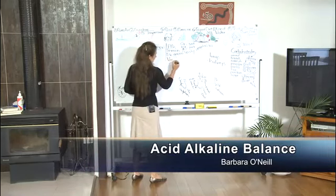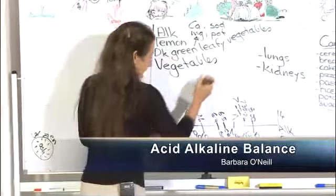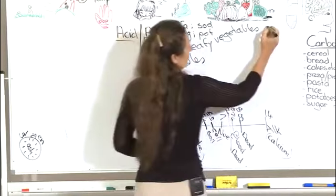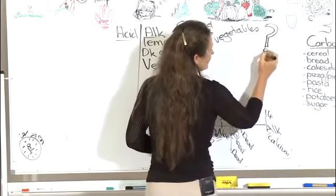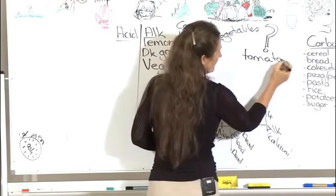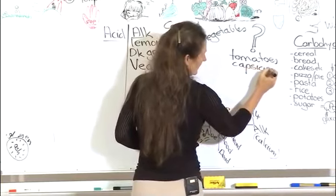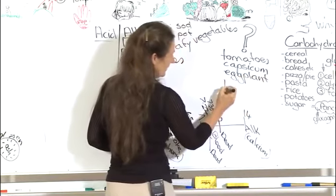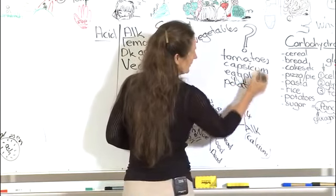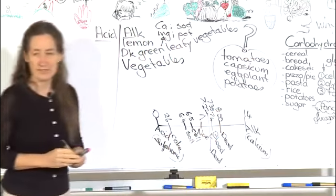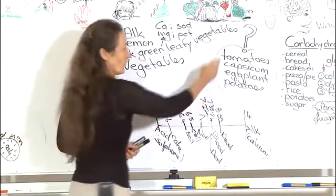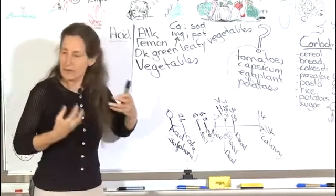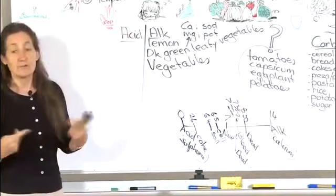All vegetables have an alkaline effect. For some people though, there is an exception. And this is the nightshade group of vegetables. So we'll put them under the question mark. For some people, the nightshade group of vegetables have an acid effect. So that's your tomatoes, your capsicum, eggplant. And the fourth vegetable in this family is potato. And I'm not referring to the sweet potato, which actually is not a potato. It's a yam. I'm referring to what the Fijians call the white man's potato or the Irish potato.